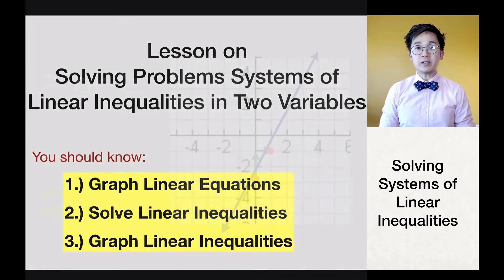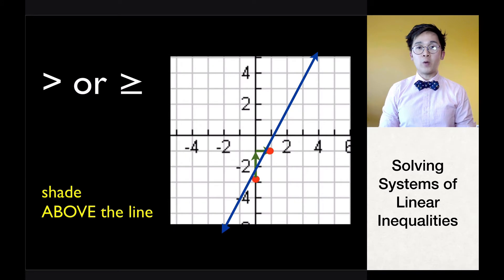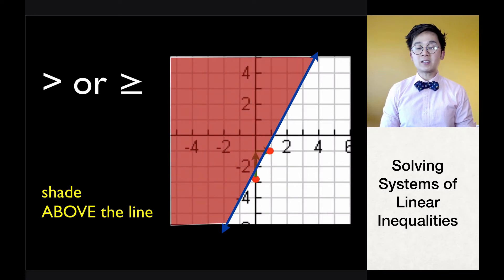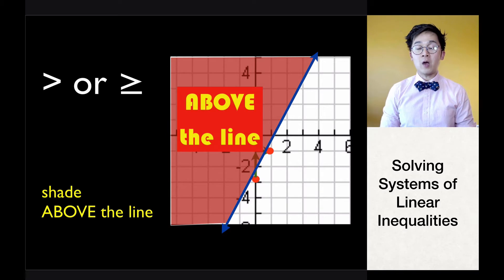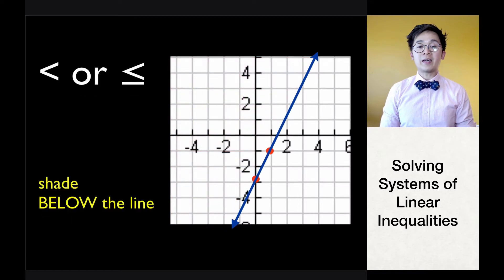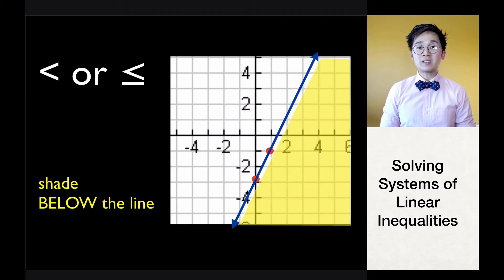In graphing linear inequalities, you need to remember when to shade above the line and when to shade below the line. When you have an inequality that uses a greater than or greater than or equal to symbol, you always shade above the line. When you have a less than or less than or equal to symbol, you shade below the line.